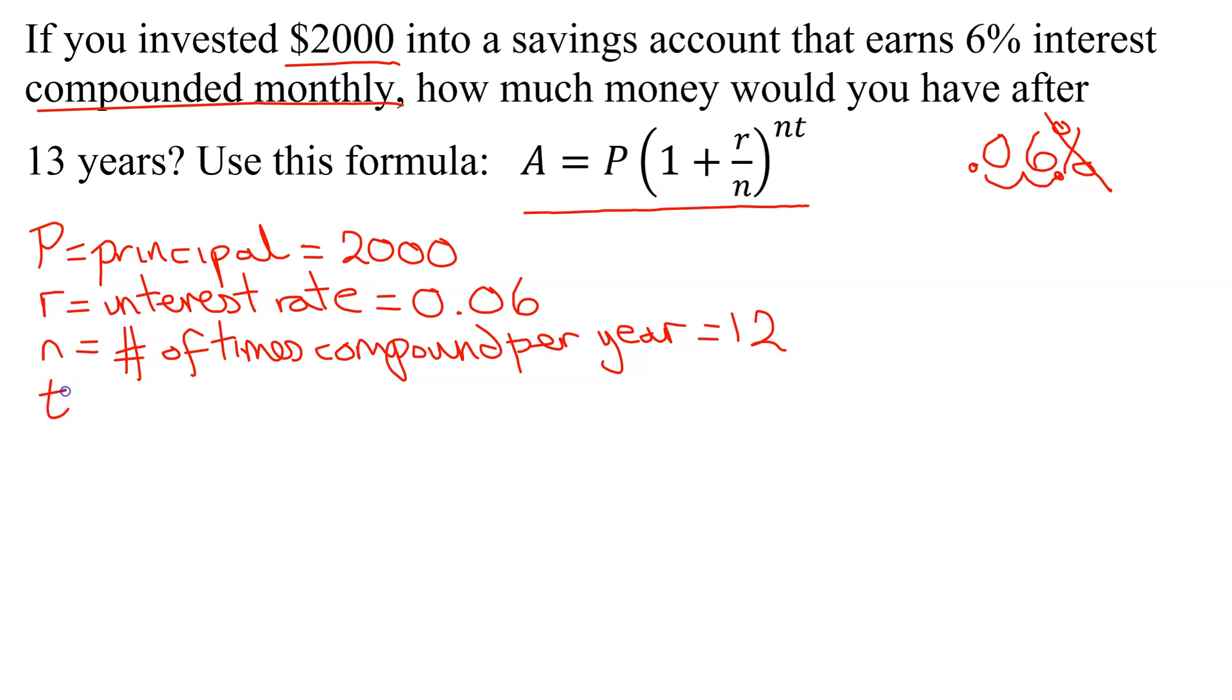And lastly, we have T. It's the time you invest it for. And in this case, it is 13 years. So T is always the time in years. So it is 13.